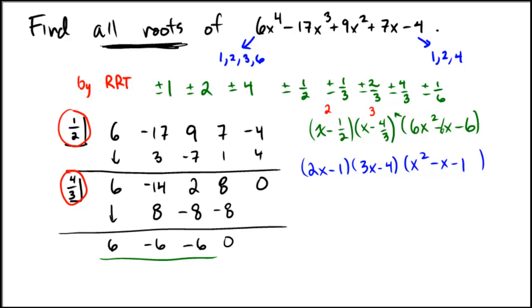So using the quadratic formula, we see that the last two solutions, last two roots, would be negative b plus or minus the square root of b squared minus 4 times a times c. And that's all over 2 times 1. That's just applying the quadratic formula to this residual quadratic. The last two solutions are 1 plus or minus radical of 1 plus 4, which would be 5, over 2.